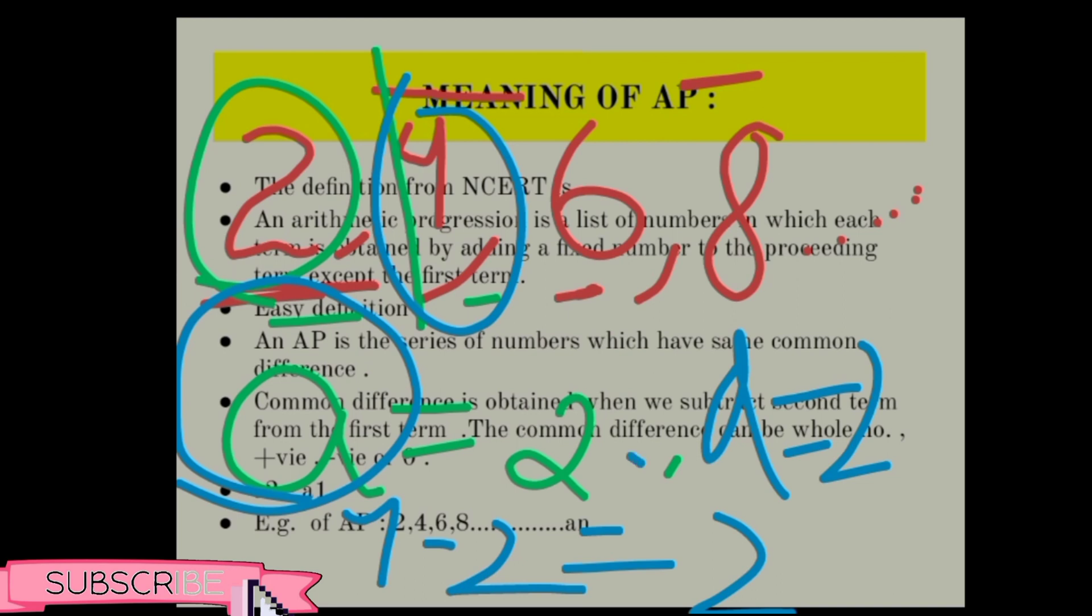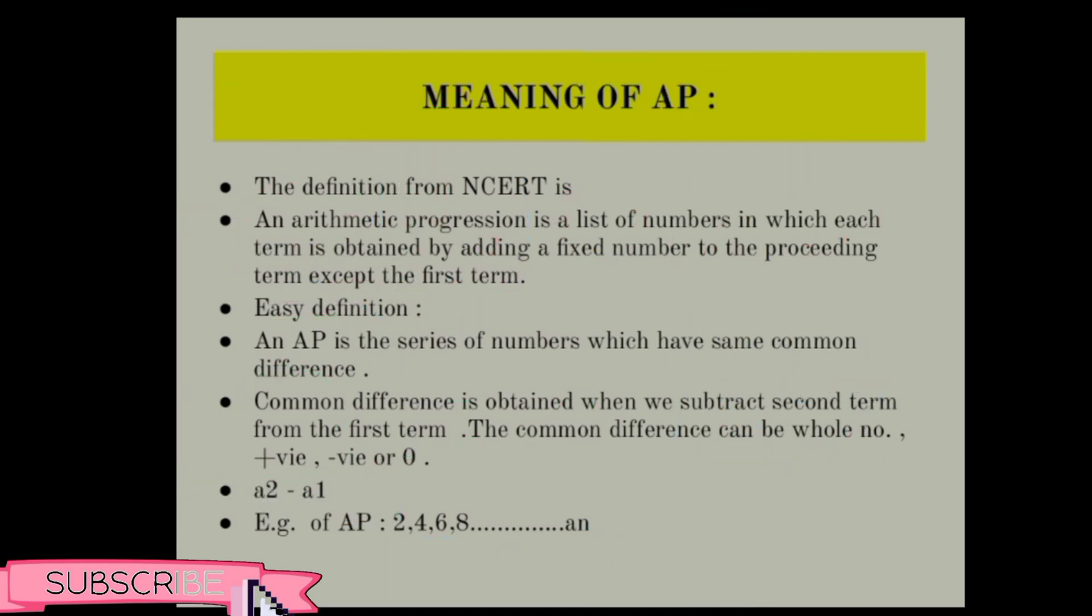So 'a' is the first term, 'd' is the difference or common difference. When we say a_n, what is the formula for a_n or the nth term—it's the next part—but a_n is the last term. We also denote it as 'l' for last term.